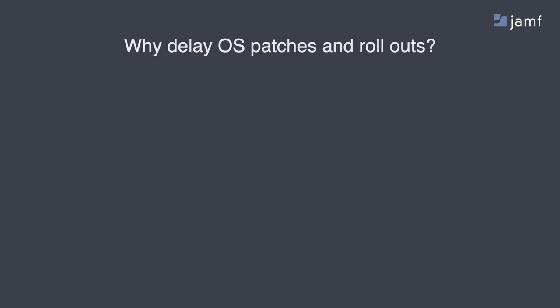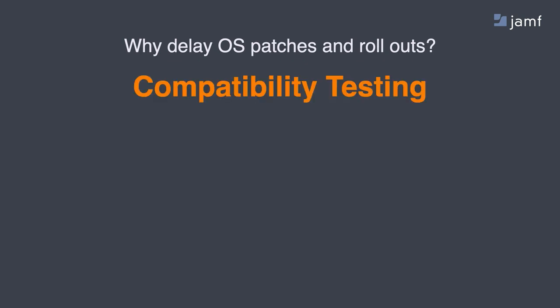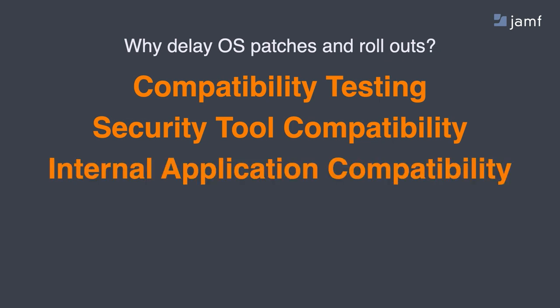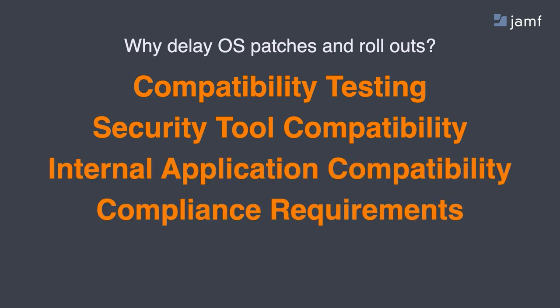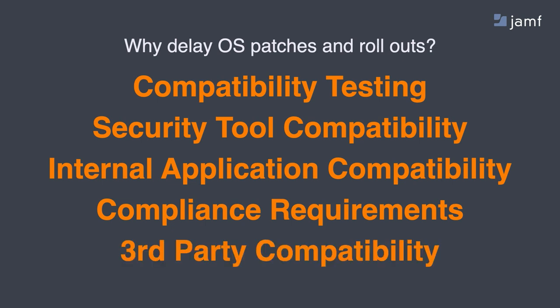What delays OS update rollouts? Compatibility testing, security tool compatibility, internal application compatibility, compliance requirements, and third-party compatibility. Finding the right balance between testing and speed is key. Compatibility testing is a core need to ensure smooth operation, but it scales with the complexity of the environment. Security tools often have deep hooks into the OS, which can cause issues during OS updates, and not all vendors can update, validate, and ship their tools quickly. Deploying security tools should never be the reason that your environment is not secure.